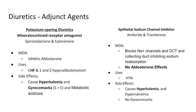Now the potassium-sparing diuretics of the mineralocorticoid receptor class — that's spironolactone and eplerenone. These specifically inhibit aldosterone. By inhibiting aldosterone from the renin-angiotensin-aldosterone system, we are not reabsorbing sodium in our collecting duct or distal convoluted tubule.